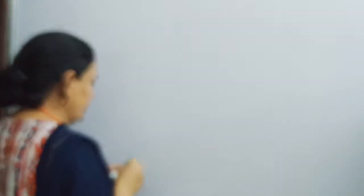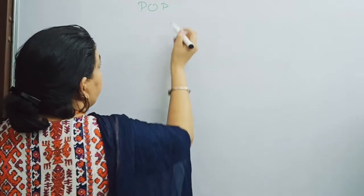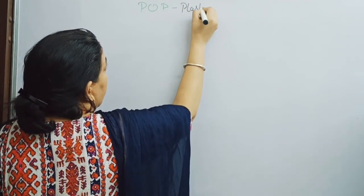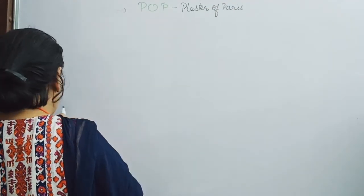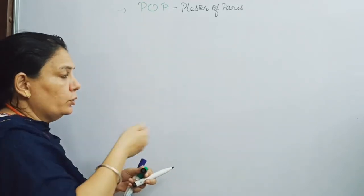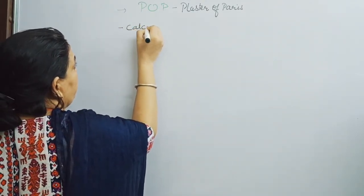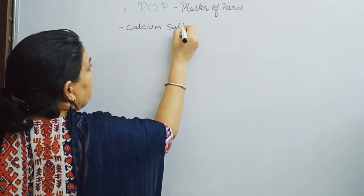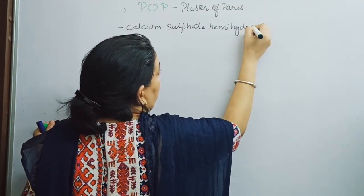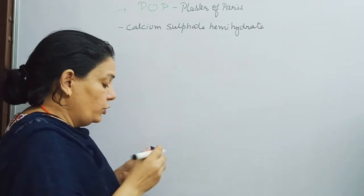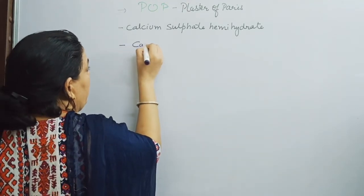Common name is Plaster of Paris, abbreviated as P.O.P. Its chemical name is Calcium Sulfate Hemihydrate. The formula of Calcium Sulfate is CaSO4, and hemihydrate means it contains half a water molecule of crystallization.